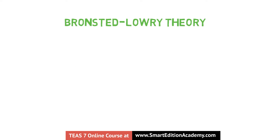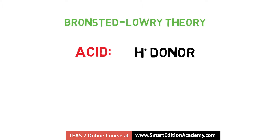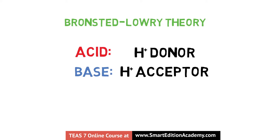This is where the Bronsted-Lowry theory comes into play. According to this theory, an acid is defined as a hydrogen ion or proton donor that increases the concentration of hydronium ions in solution, and a base is a hydrogen ion or proton acceptor that increases hydroxide ion concentration in solution. So when an acid donates a hydrogen ion, it produces a conjugate base, and vice versa — when a base accepts a hydrogen ion, it produces a conjugate acid.